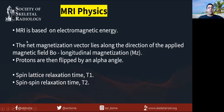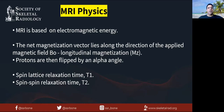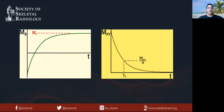MRI is based on electromagnetic energy. Once you put the body in the magnet, there's a net magnetization vector along the direction of the applied magnetic field B0 — that's called the longitudinal magnetization. The protons are then flipped by an alpha angle using a B1 pulse, and they relax with spin-lattice relaxation, also referred to as T1, and spin-spin relaxation, referred to as T2.